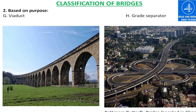This is a Viaduct, which is high-level — highly elevated — and the length of the bridge is substantial. And this is a Grade Separator, which is provided where two or three roads intersect each other. This bridge is known as the Kathipara Butterfly Bridge and is located in Chennai.